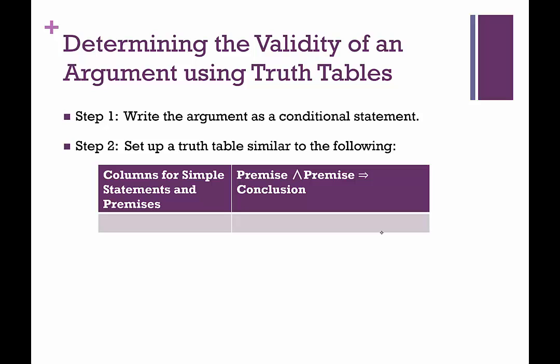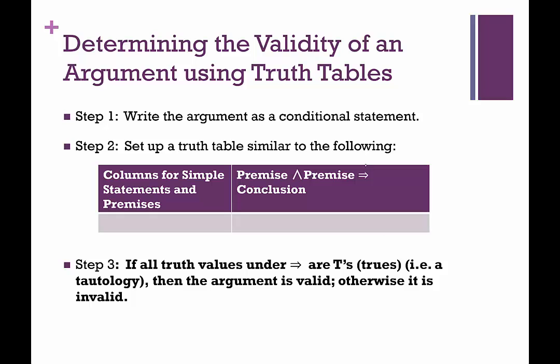For arguments, we're going to have one final column, and our final column is going to be a conditional statement — an if-then. The hypothesis is a conjunction of all of the premises, so it'll be premise one and premise two and premise three, and so on. Then the conclusion is the conclusion. When it's in this form, it looks like a conditional but it has a double arrow sign — we call that the implication.